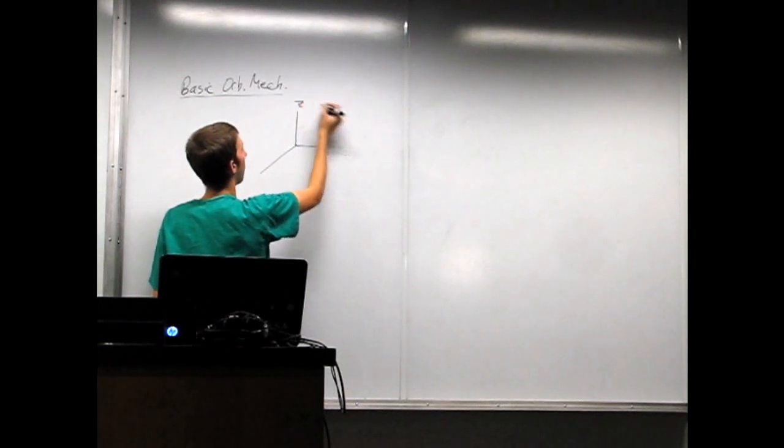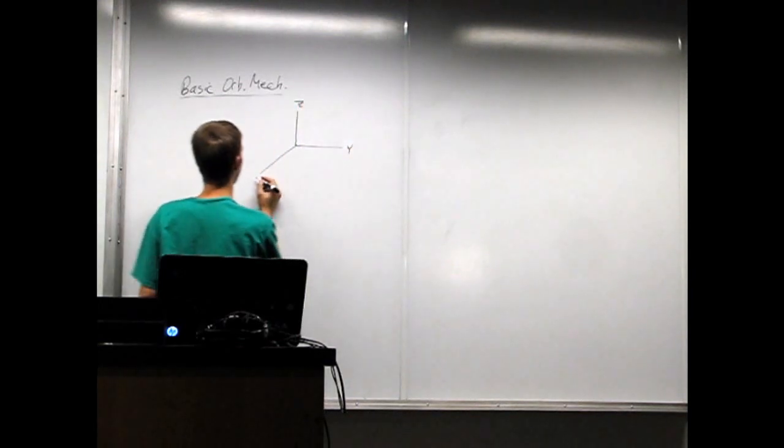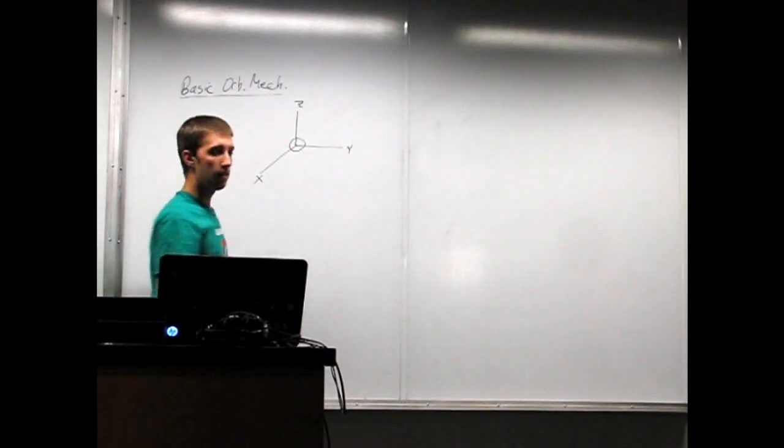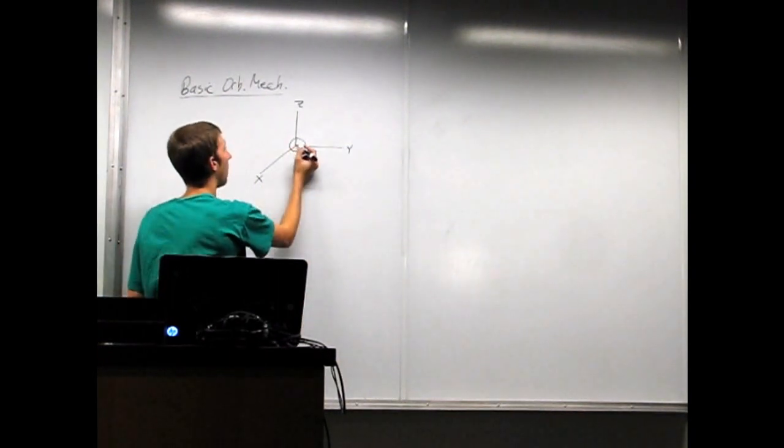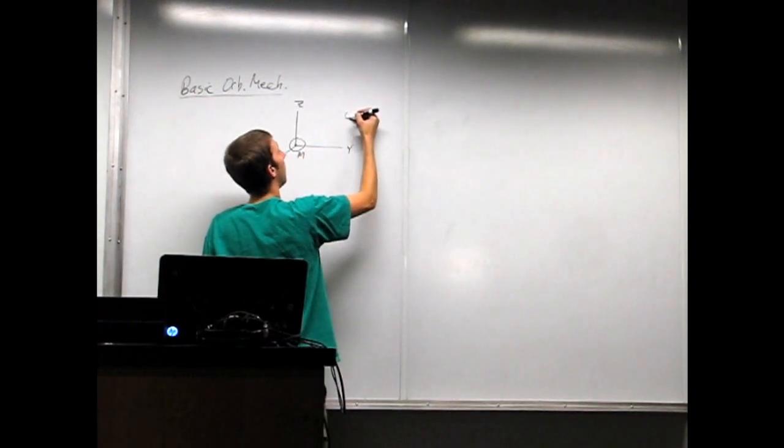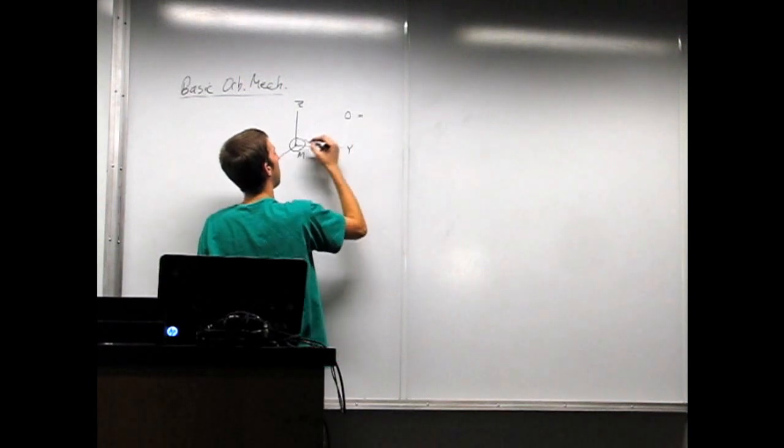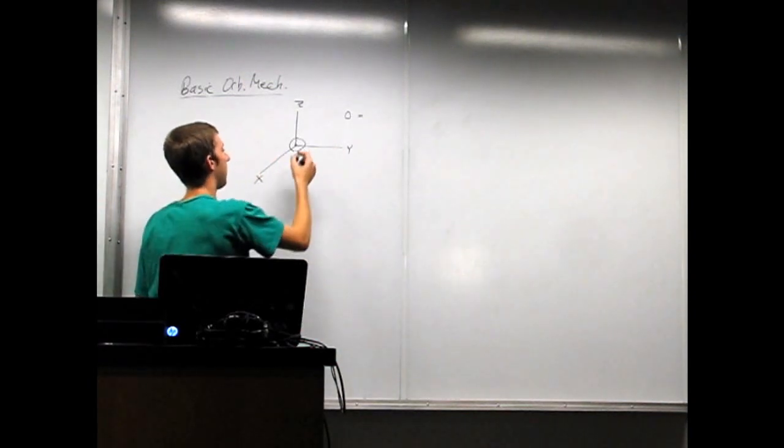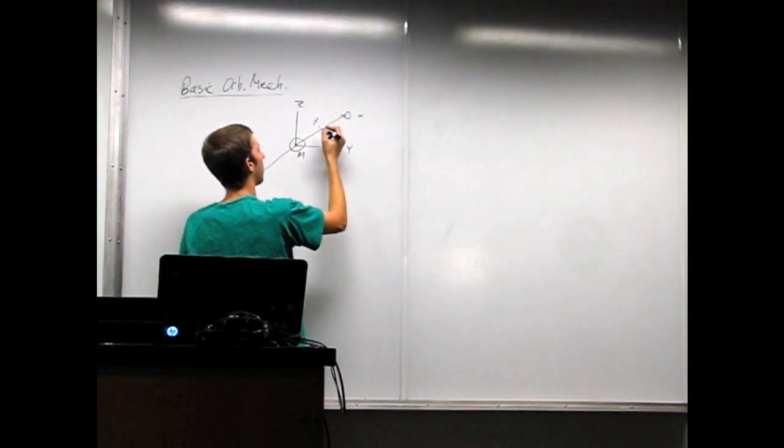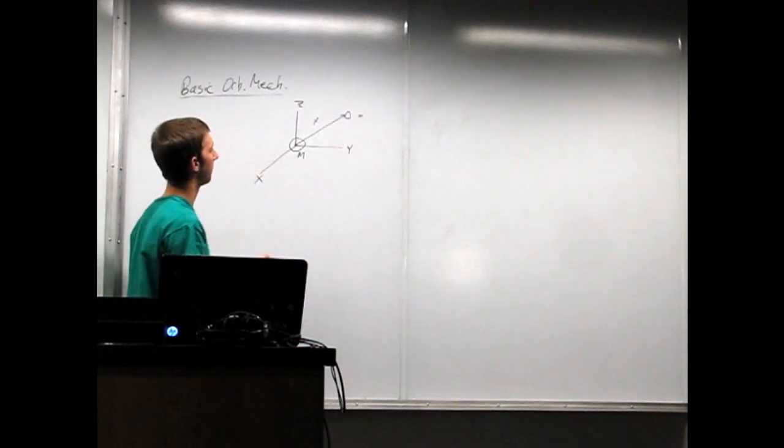So, here is our simple x, y, z coordinate system with the origin at the center of the big mass, big M. And we have a little mass, little m out here, and this radius here, R, connects the two.